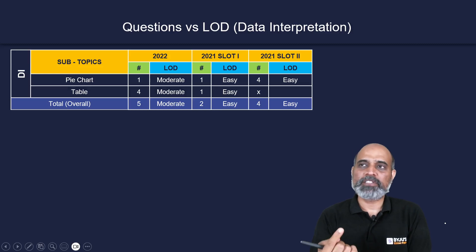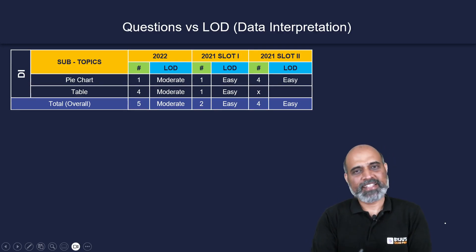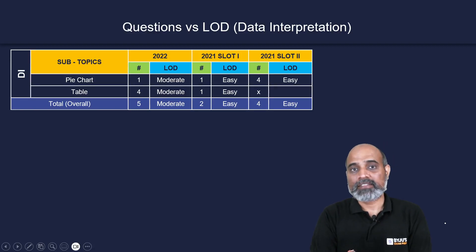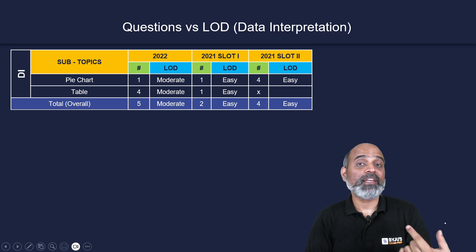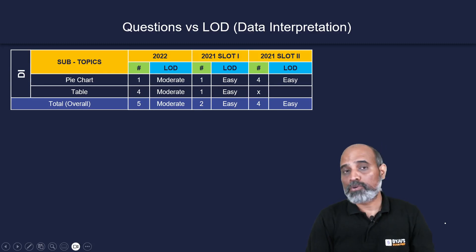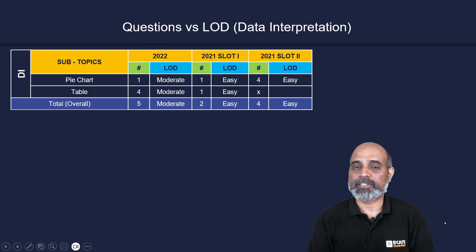When a DI set has only one or two associated questions, it tends to be easy. When there are four questions in a set, it becomes a little more difficult — shifting from easy to moderate. In slot two of 2021, all four DI questions were from a pie chart. Notably, line graphs and bar graphs did not appear in any of the last three exams.